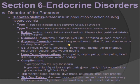Disorders of the pancreas — diabetes mellitus: this is altered insulin production or action causing hyperglycemia (too much glucose). Type 1 is when the beta cells in the pancreas are destroyed, usually before age 30. Type 2 is when there's insufficient insulin production and insulin resistance, usually after age 30. Risk factors include family history, obesity, African or Native American or Hispanic ethnicity, hypertension, gestational diabetes, or a sedentary lifestyle.